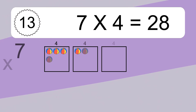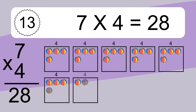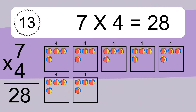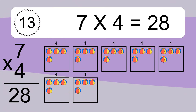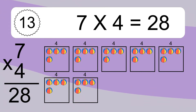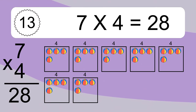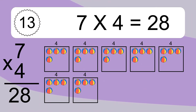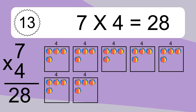7 times 4 equals 28. We have 7 boxes, and each box has 4 colorful balls inside. If you count all the balls in all the boxes together, you will have 7 times 4 balls. This equals 28 balls.